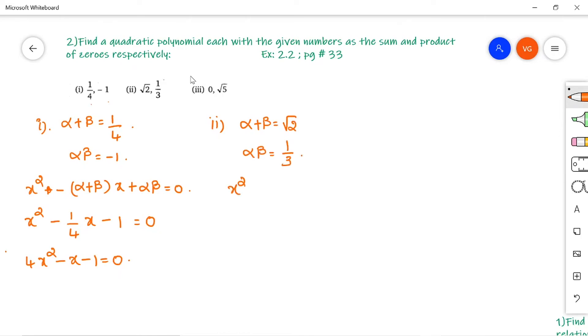Write down the formula and directly substitute the sum and product of zeros. x² - (α + β)x + αβ = 0, so x² - √2x + 1/3 = 0. Taking the LCM, 3x² - 3√2x + 1 = 0.